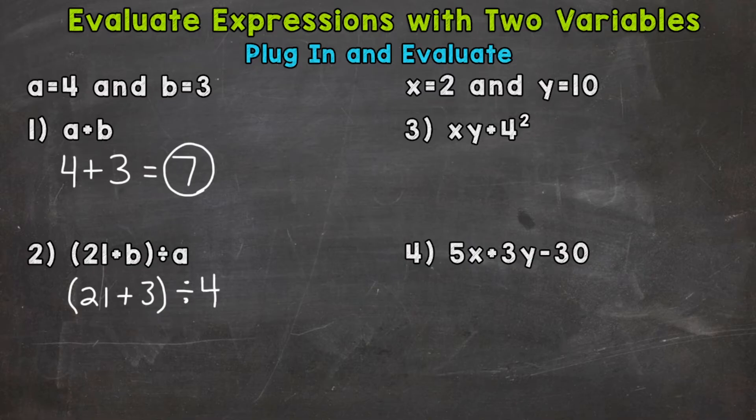Now in this problem, we have multiple operations and steps, so we need to use the order of operations. Any parentheses? Yes, that's where we need to start. We have 21 plus 3 in the parentheses, so that's going to give us 24.